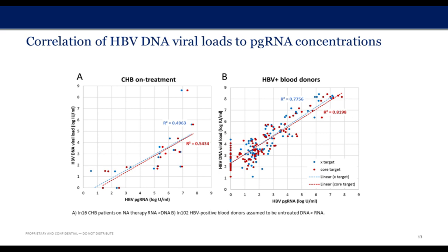We looked at the correlation of pre-genomic RNA in chronically infected patients on therapy versus those not treated, to see how DNA and RNA values relate. In a chronically infected Hep B patient on treatment, as expected, DNA levels are lower and RNA levels are less impacted — RNA can be higher than DNA. In contrast, in donor samples that are Hep B positive and presumably not on treatment, DNA values are on average about one and a half logs higher than the RNA values, a nice validation as expected.